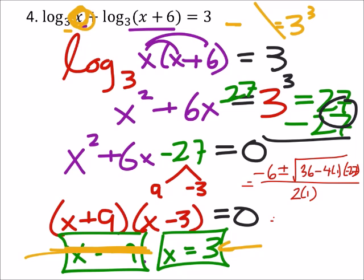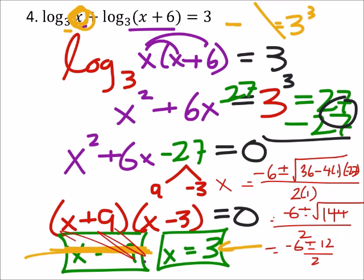So this ends up being, well, I'll finish it, we're good. Negative 6 plus or minus 36 plus... That's 144. 144 over 2. So that's a negative 6 plus or minus 12 all over 2. And yeah, that's going to give us 3 and negative 9. But again, we can't have a negative answer for this.